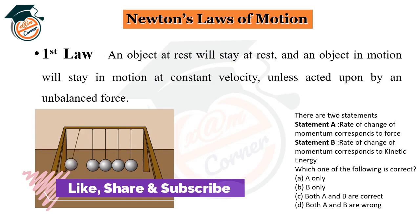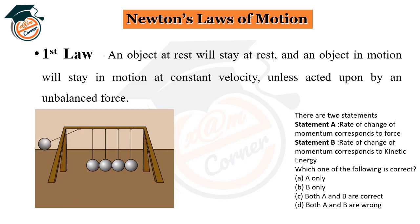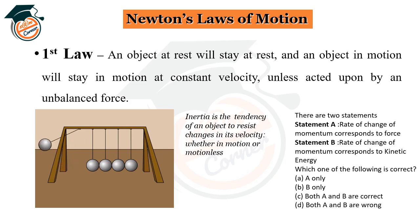An unbalanced force acts only when there is motion between objects. Newton's first law introduces the key term: inertia. Inertia is defined as the tendency of an object to resist changes in its velocity, whether the object is in motion or motionless.